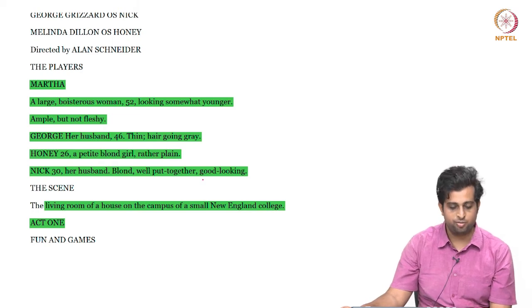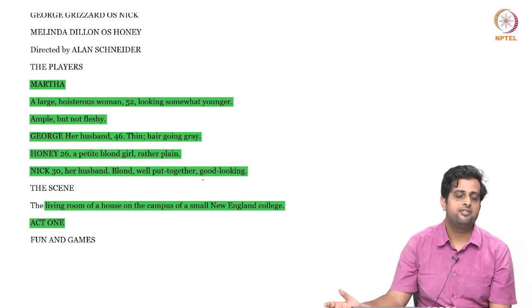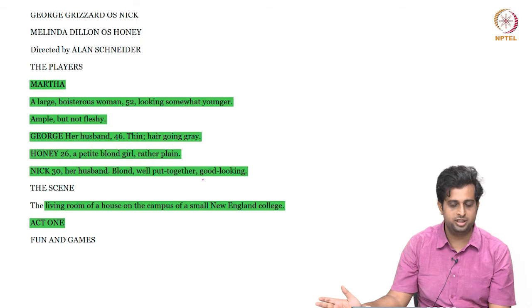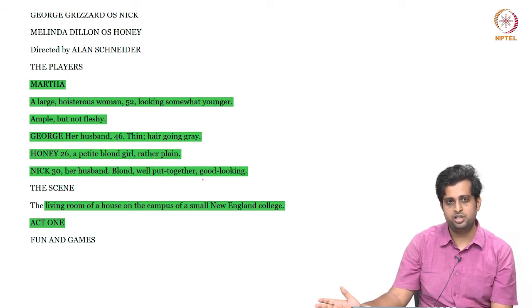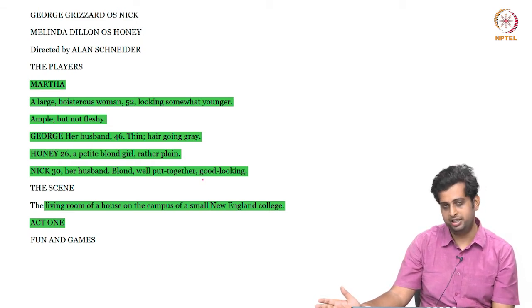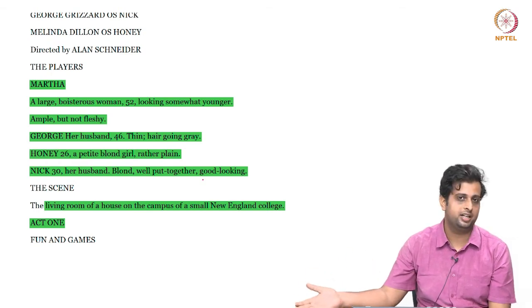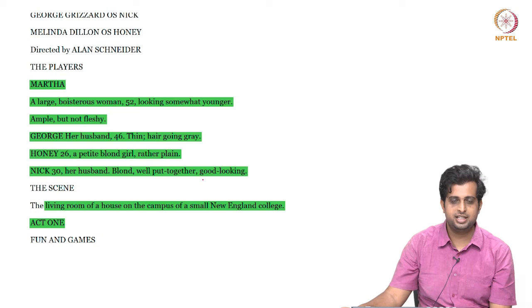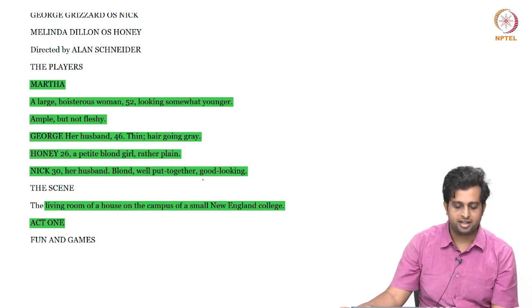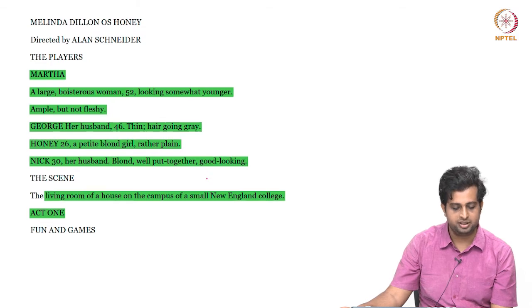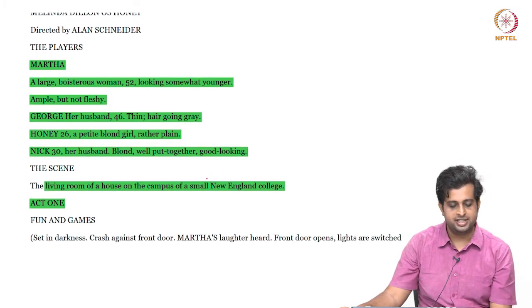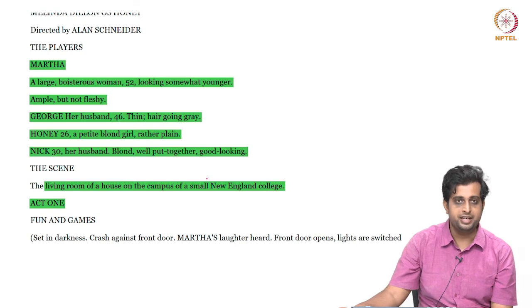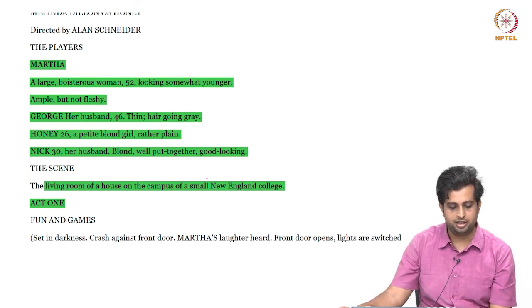Martha is a large boisterous woman, 52, looking somewhat younger. We must keep in mind different references to age in the play because age plays a critical role. One huge important aspect is the difference of age between Martha, George and Nick and Honey — Nick and Honey are much younger than their hosts. George, her husband, is 46, thin, hair going grey, younger than Martha. Honey is 26, a rather plain blonde girl, and Nick is 30, her husband, blonde, well put together, good looking.